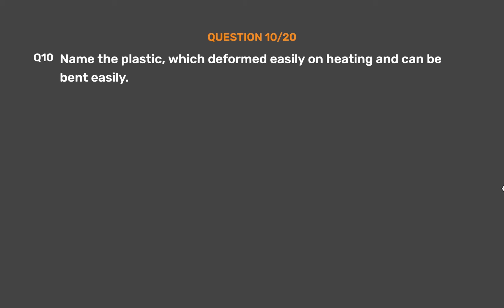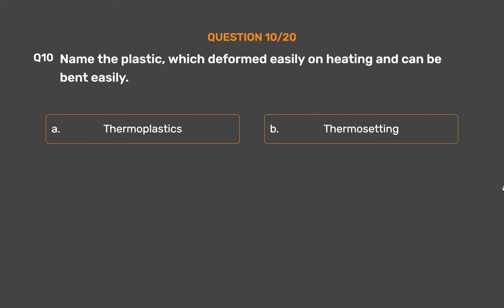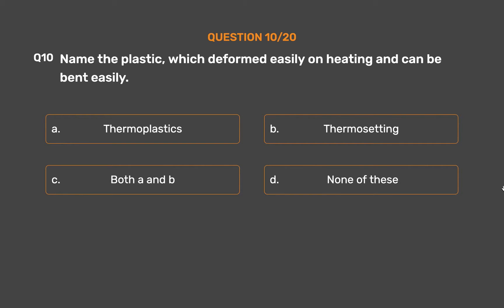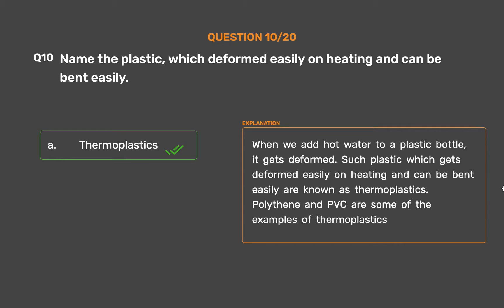Question Number 10. Name the plastic which gets deformed easily on heating and can be bent easily. Option A: Thermoplastics. Option B: Thermosetting. Option C: Both A and B. Option D: None of these. The correct answer is Option A: Thermoplastics. When we add hot water to a plastic bottle, it gets deformed. Such plastics which get deformed easily on heating and can be bent easily are known as thermoplastics. Polythene and PVC are some examples of thermoplastics.